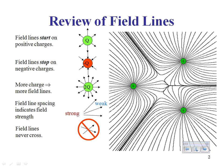A couple of quick reminders. Electric field lines either start on positive charges or at infinity. The field lines stop on negative charges or they go off to infinity. More charge is represented by more field lines — the number of field lines represents how much charge is there. The field line spacing indicates the field strength: more densely packed means a stronger electric field, more spread apart means a weaker electric field. Electric field lines never cross.